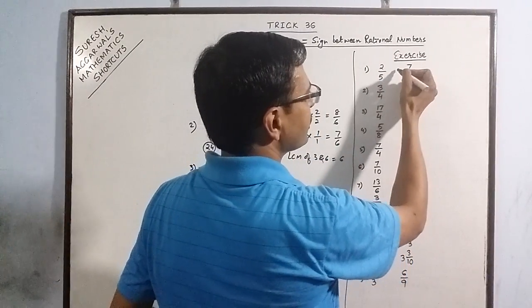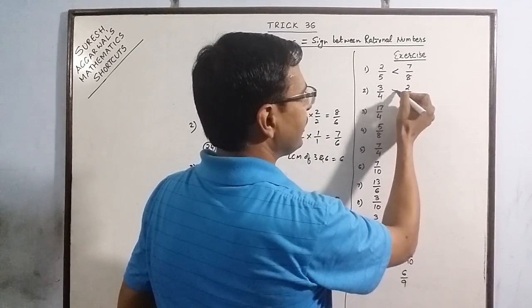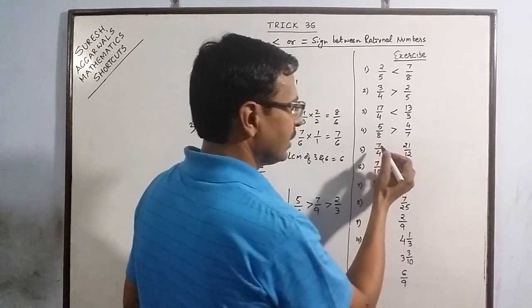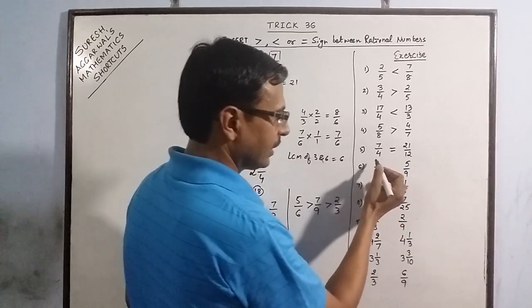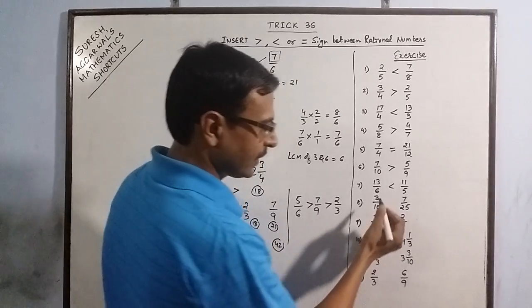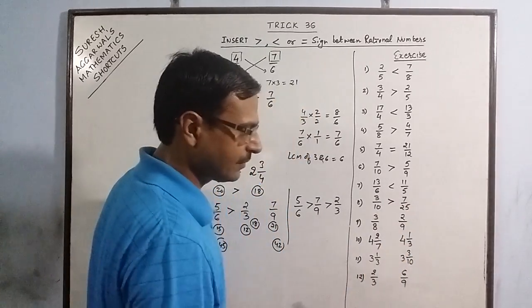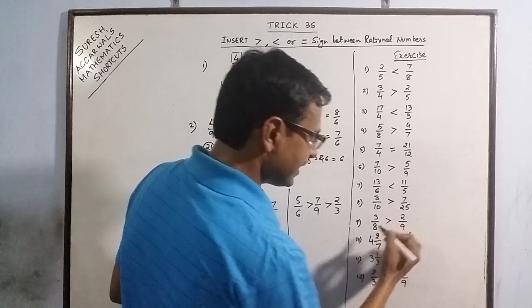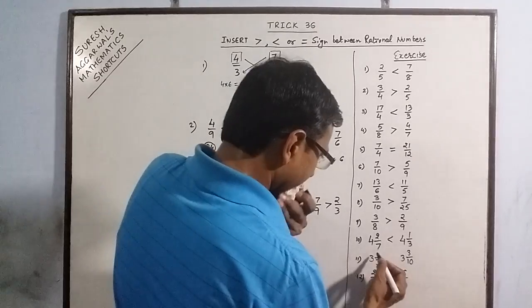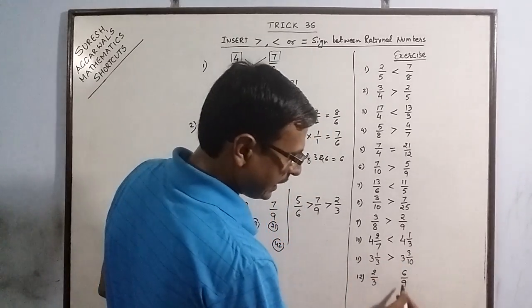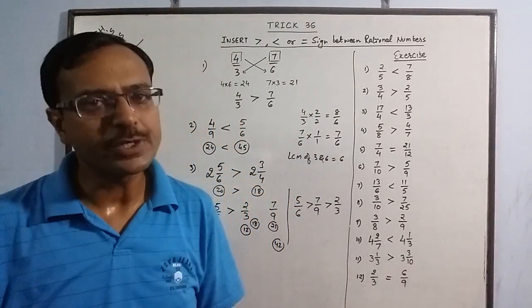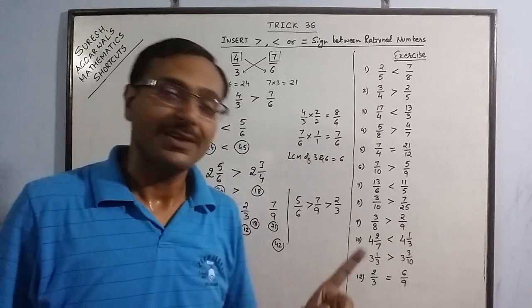So here I go: 16, 35, so 35 is greater. 15, 8, 15 is greater. 51, 52, 52 is greater. 35, 32, 35 is greater. 84, 84, they are equal. 63, 53, 53 is greater. 65, 66, 66 is greater. 75, 70, 75 is greater. 27, 16, 27 is greater. 4, 4 is same, so 6, 7, 7 is greater. 10 and 9, 10 is greater. And 18, 18, they are equal. See? It takes just one or two seconds only to find out which fraction is greater.